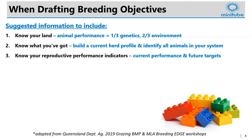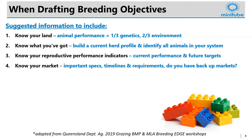You need to know your reproductive performance indicators — what are you measuring the success of your breeders from, how are they currently performing, and what might you like them to be doing going forward? Also know your market: understand the specifications required of you, your timelines, and whether you have backup markets in place. Currently, markets can change overnight, so knowing your options means you don't get stuck.